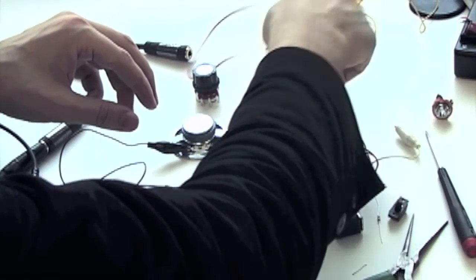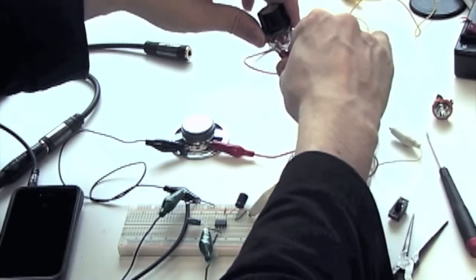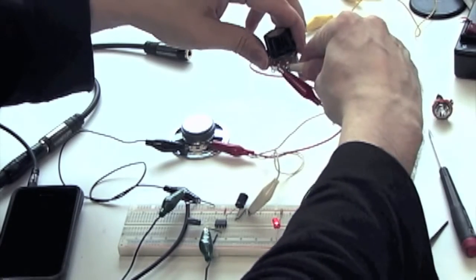Using a third alligator clip, we can connect the output of our circuit to one side of a variable resistor, and using a fourth clip, we can connect to the other speaker terminal. These leads can be connected in either order.